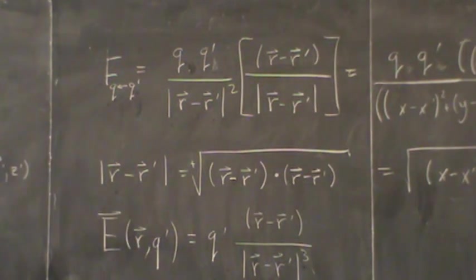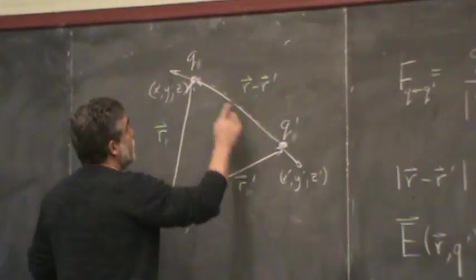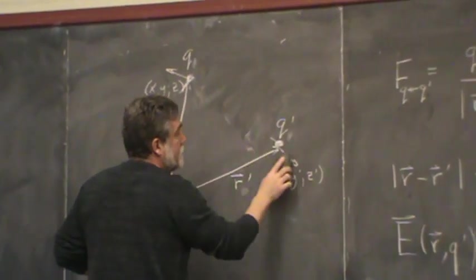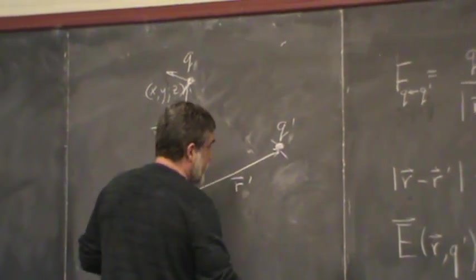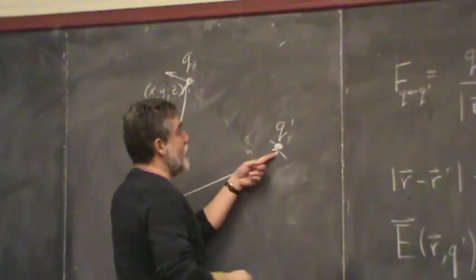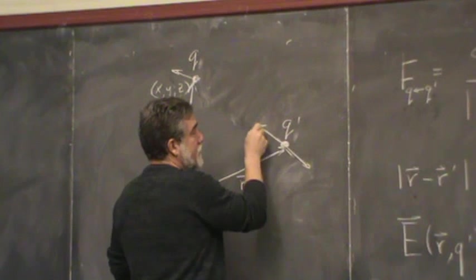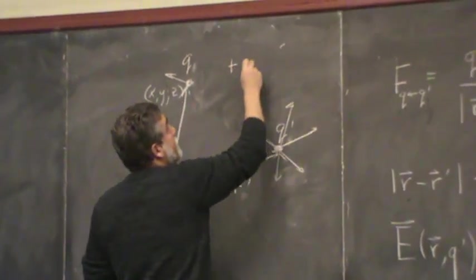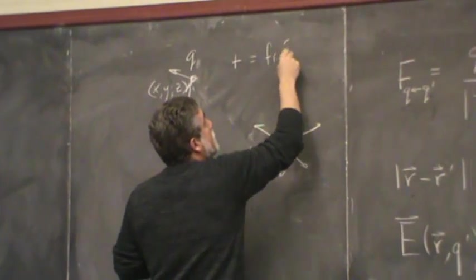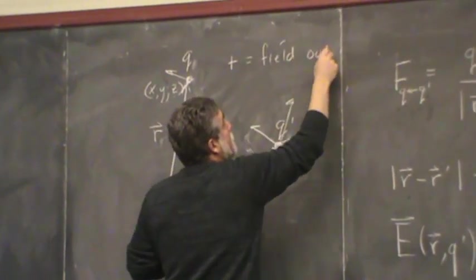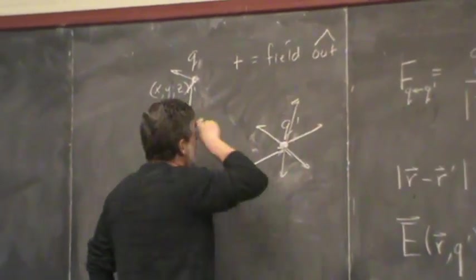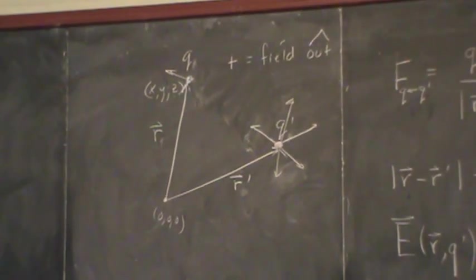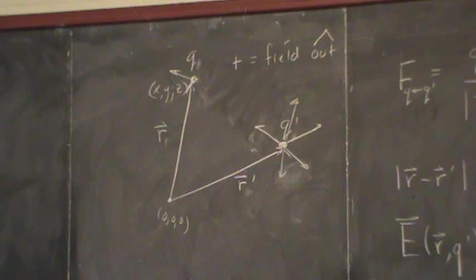Although it's defined there, to be a little more explicit: if q prime is positive, then the field leaves — positive, field points out. That's the unit vector. Negative — field points in towards the charge.